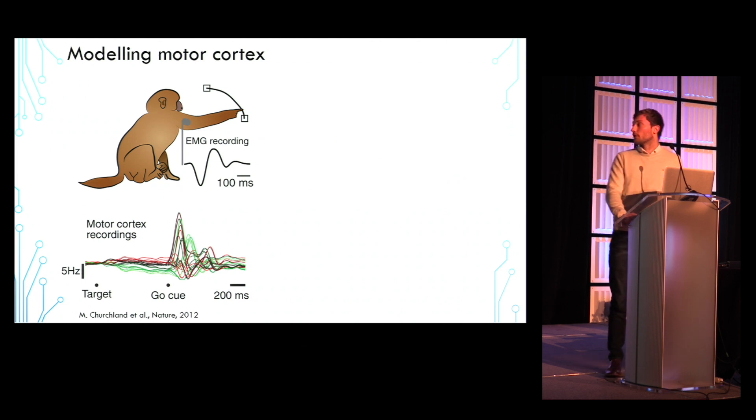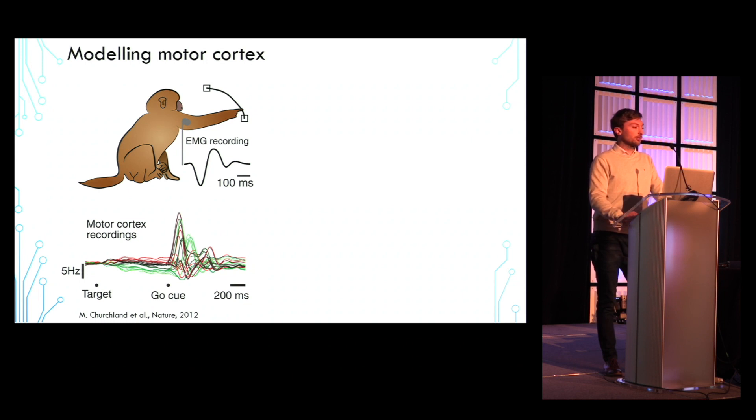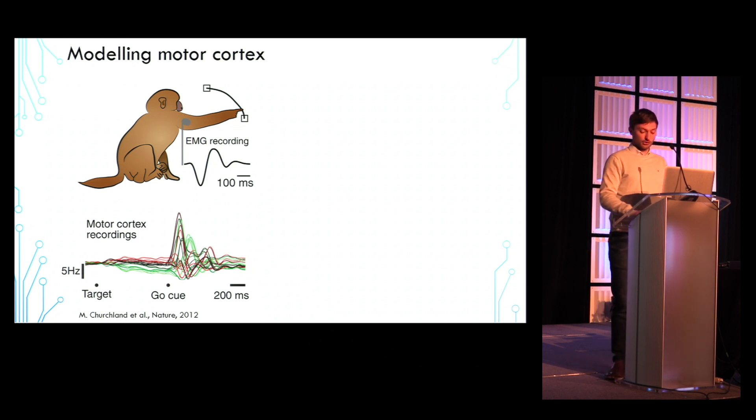This is an example of a typical primate motor task, where a monkey is trained to reach from the center of a screen to a target. Electrophysiological recordings of motor cortex are taken together with EMG muscle dynamics. On the bottom, I'm showing example firing rates of one neuron in motor cortex for many different reaches. We can see how complex the activity is at the single neuron level.